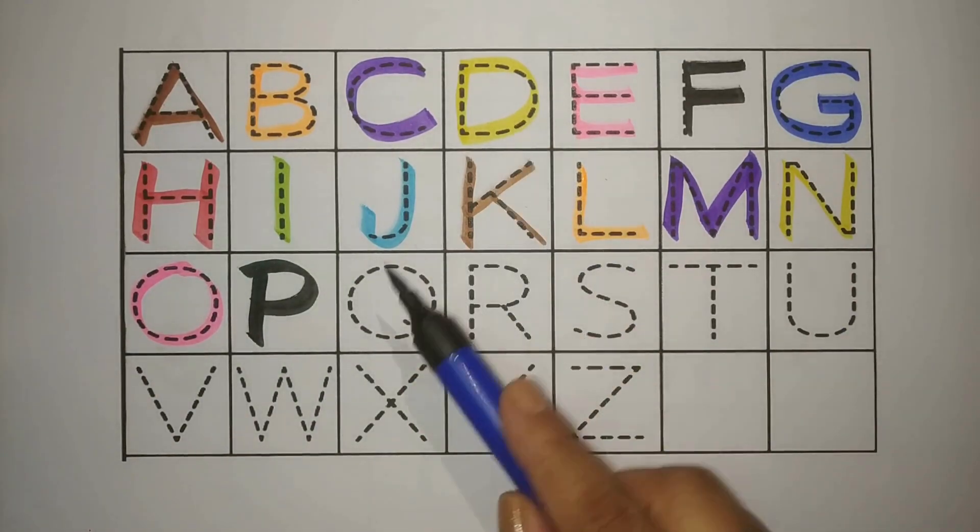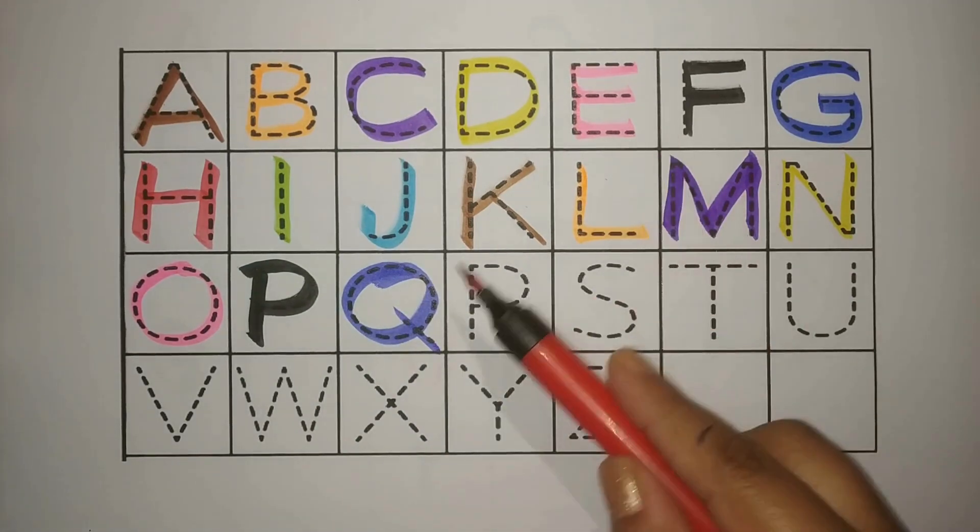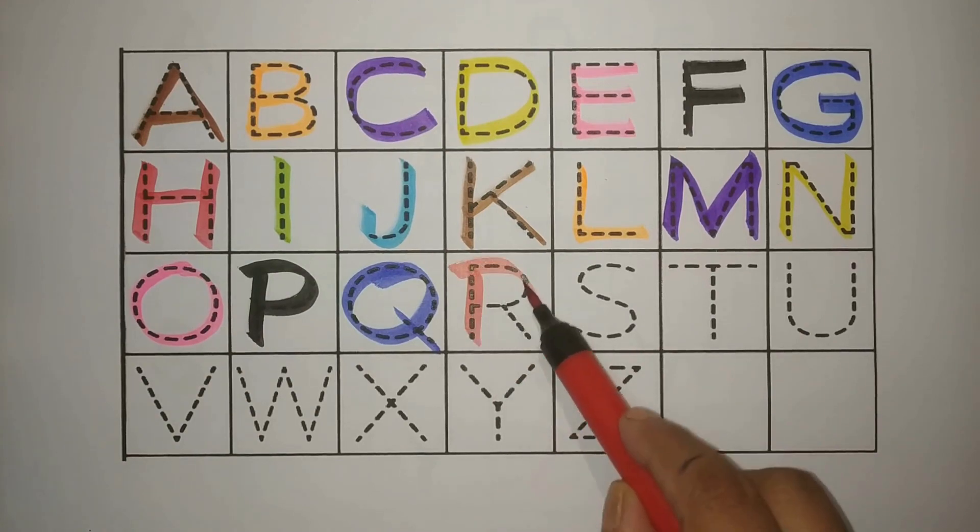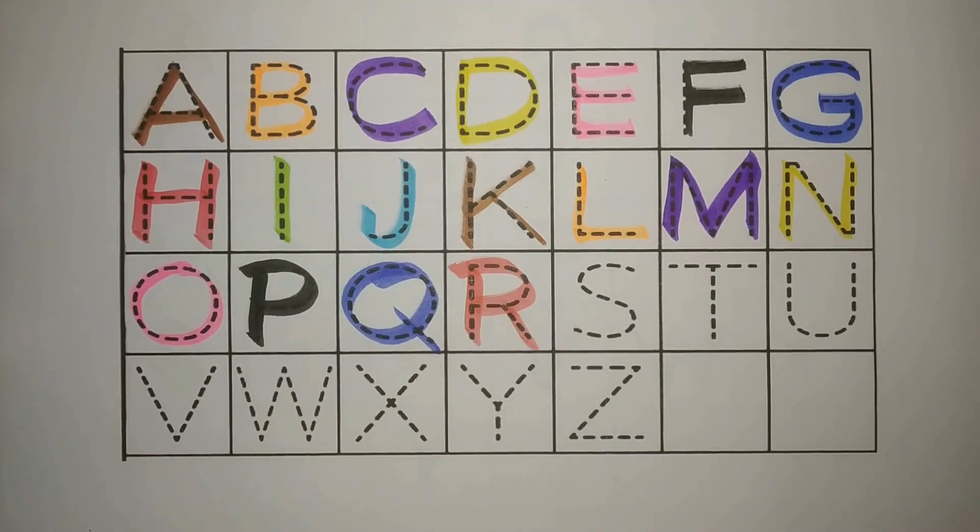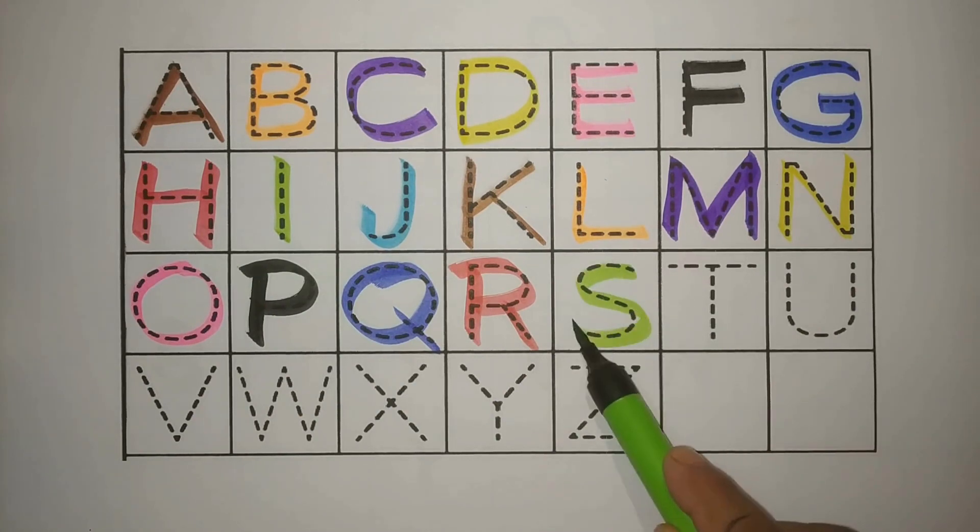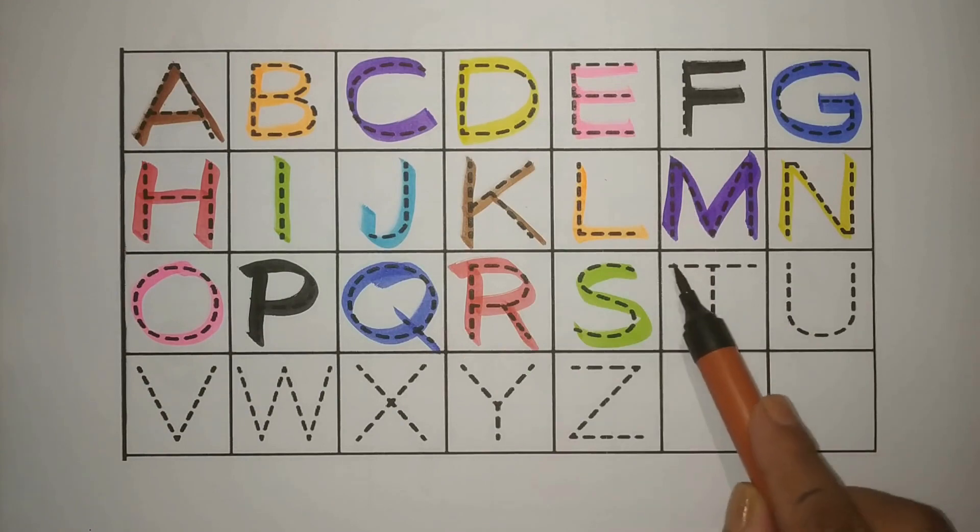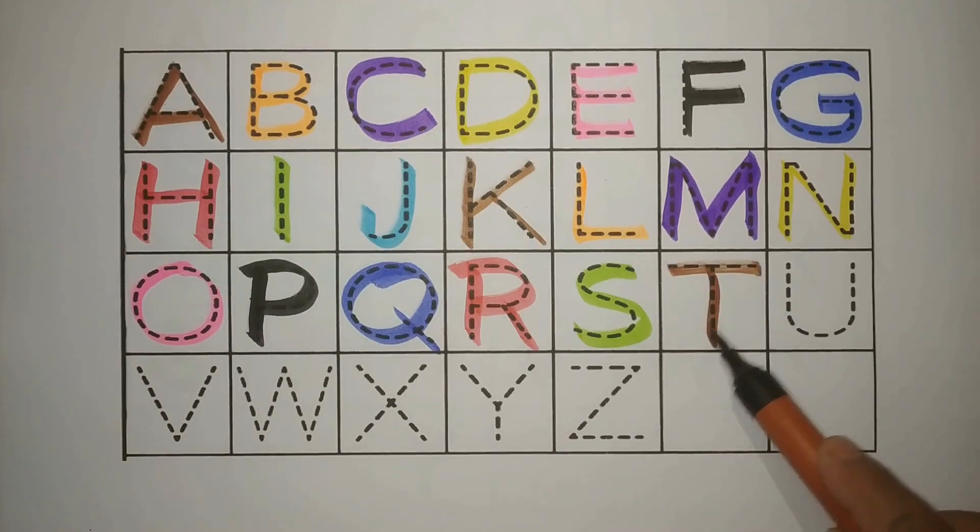Blue Q, Q for Queen, Rani. Red R, R for Rainbow, Indra Dhanush. Green S, S for Stars, Tare. Brown T, T for Tree, Paid.